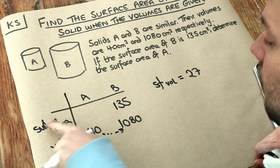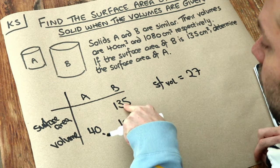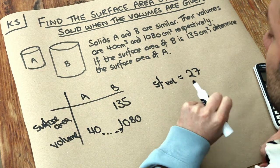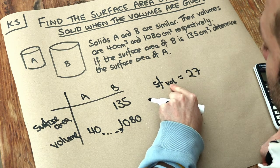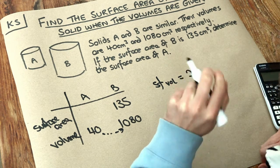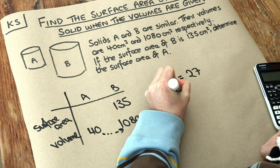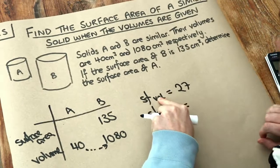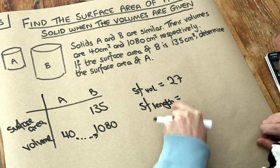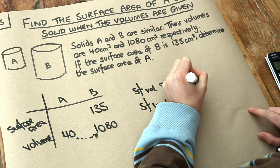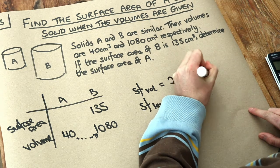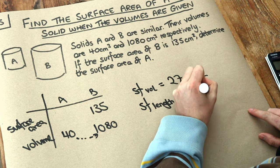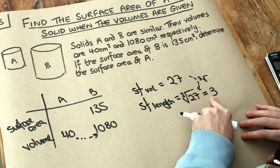And we want to work out the scale factor of surface area so we can scale the surface area of B to get the surface area of A. It's difficult to go directly from the scale factor of volume to surface area, but it's relatively easy to find the scale factor of length. If we have the scale factor of volume we can go to the scale factor of length by cube rooting that number. So the cube root of 27 gives us a scale factor of length of 3.